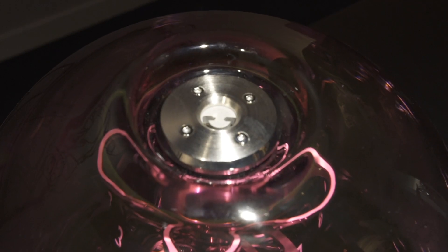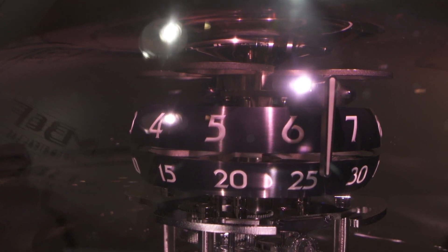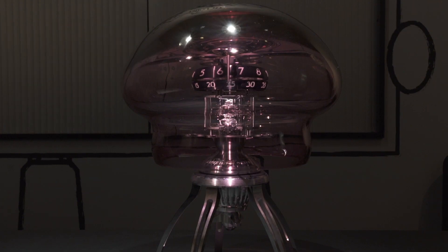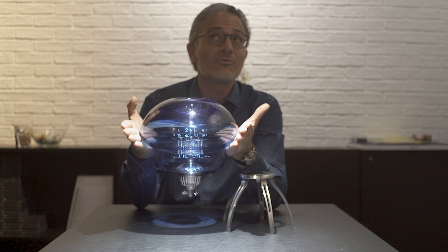And another cool aspect of this clock is it actually has two configurations. It's either a desktop, as you can see here, clock, so it stands on these feet. Or you remove it from the feet, as you can see here, and hang it with a cable from the ceiling.